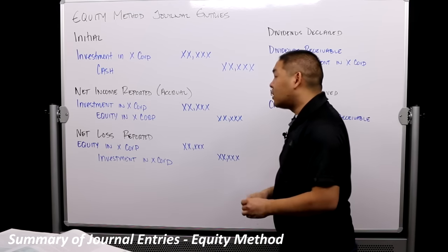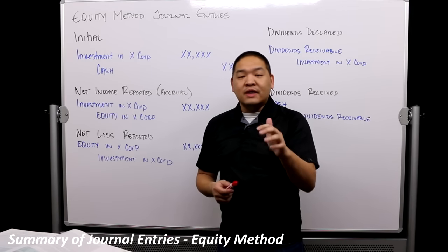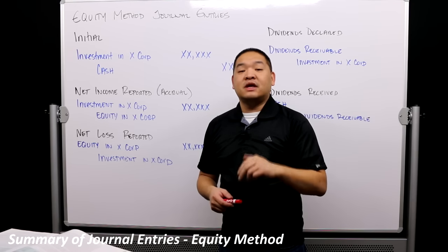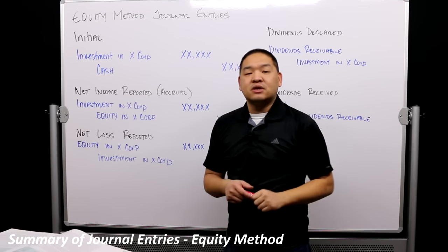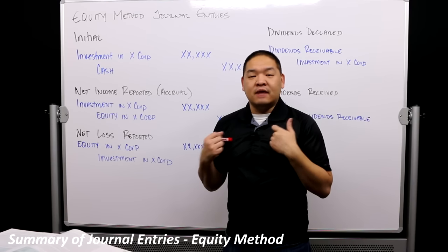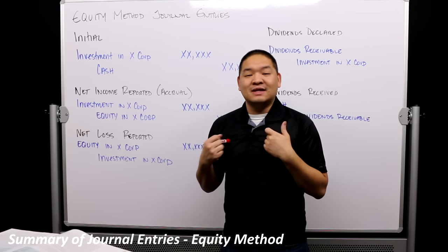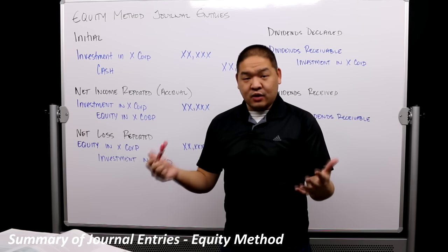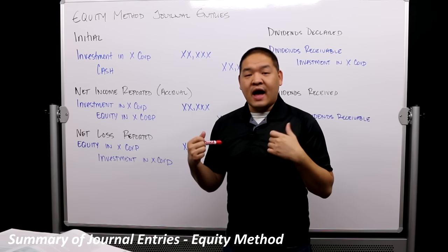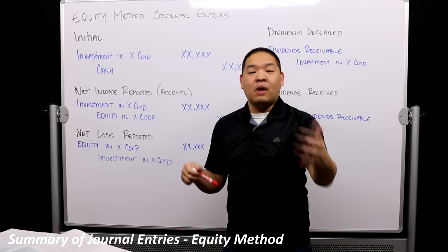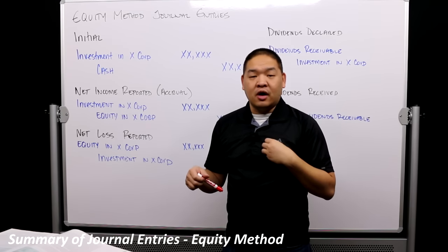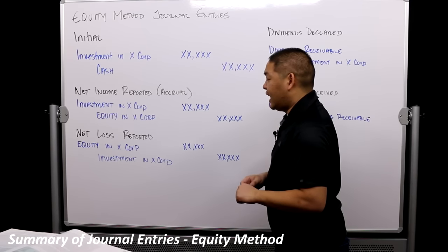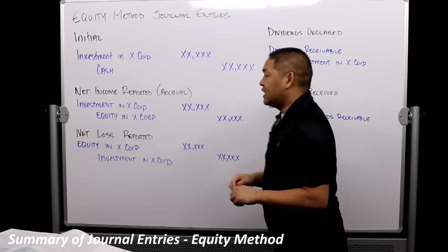We use the accrual method, which means when the investee earns that income, that's when we report it — not when we receive the cash or the dividends. The reason is because we can influence the dividends if we have a significant influence on the organization, which is what the equity method is for. So the entry is: debit Investment in X Corp, credit Equity in X Corp — that's when net income is reported.